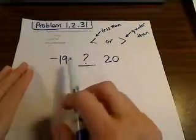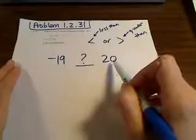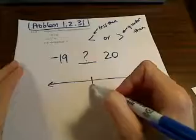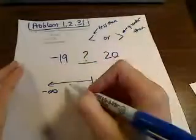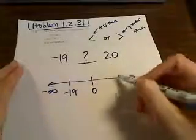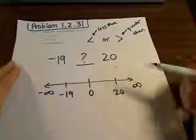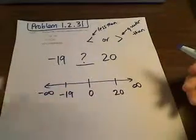So we have to decide which one of these is less and which one is greater. Well, I hope it's obvious that 20 is greater. If you just take a look at your number line, you know that 0 divides the negative numbers and the positive numbers. So negative 19 is over here somewhere and 20 is over here somewhere. So 20 is greater than any negative number. Any positive number is greater than any negative number.